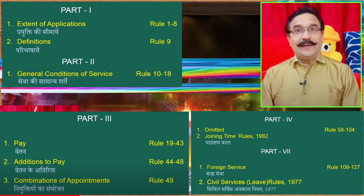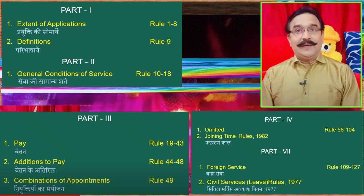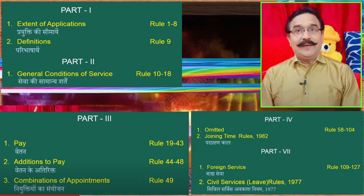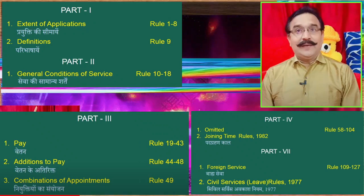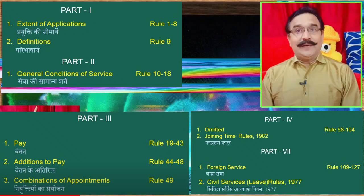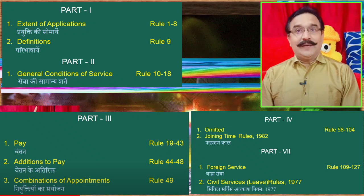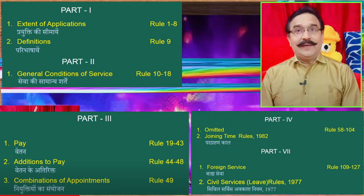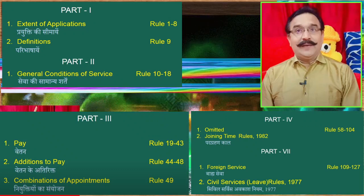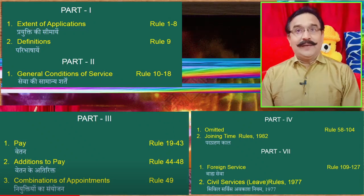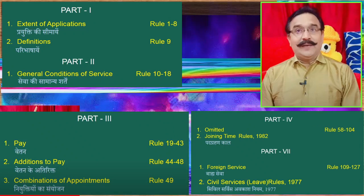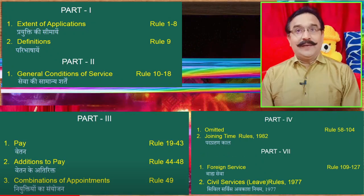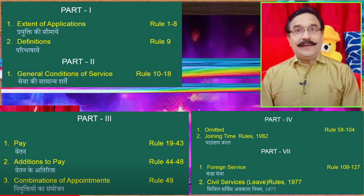If an MCQ question mentions a definition in Rule 58 to 104, you can assume it is wrong because those rules have been omitted — Rules 58 to 104 are deleted and do not exist. Joining time rules are also given. Part 7 covers foreign services, Rules 109 to 127. CCS Leave Rules 1977 are also given separately. In total, there are 7 parts in FR-SR.